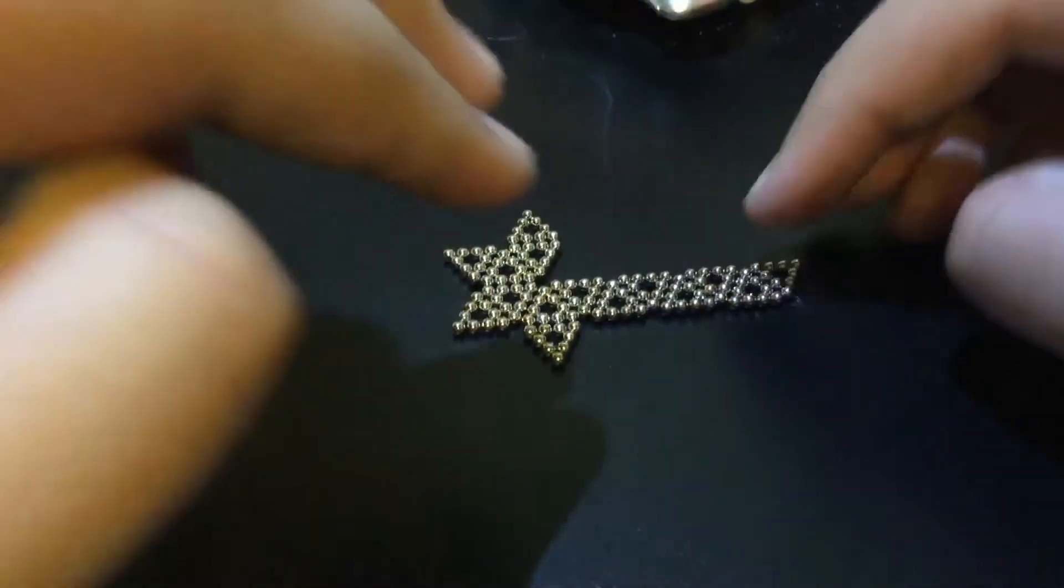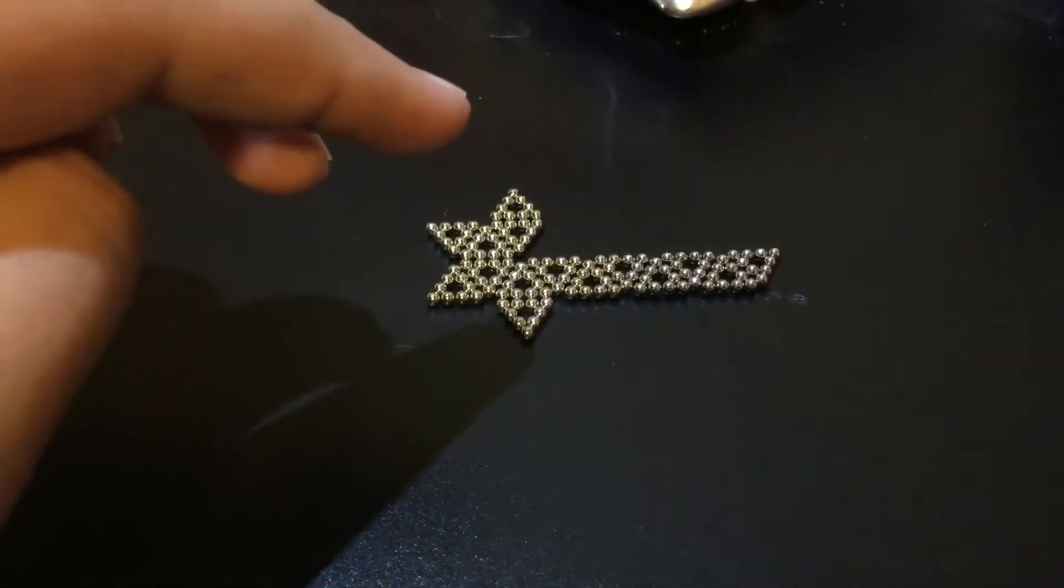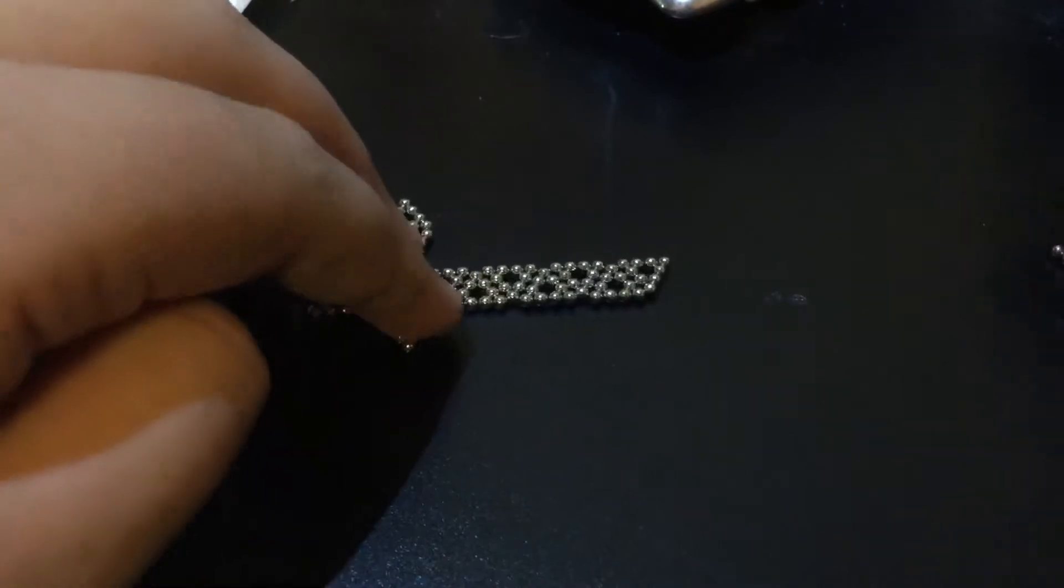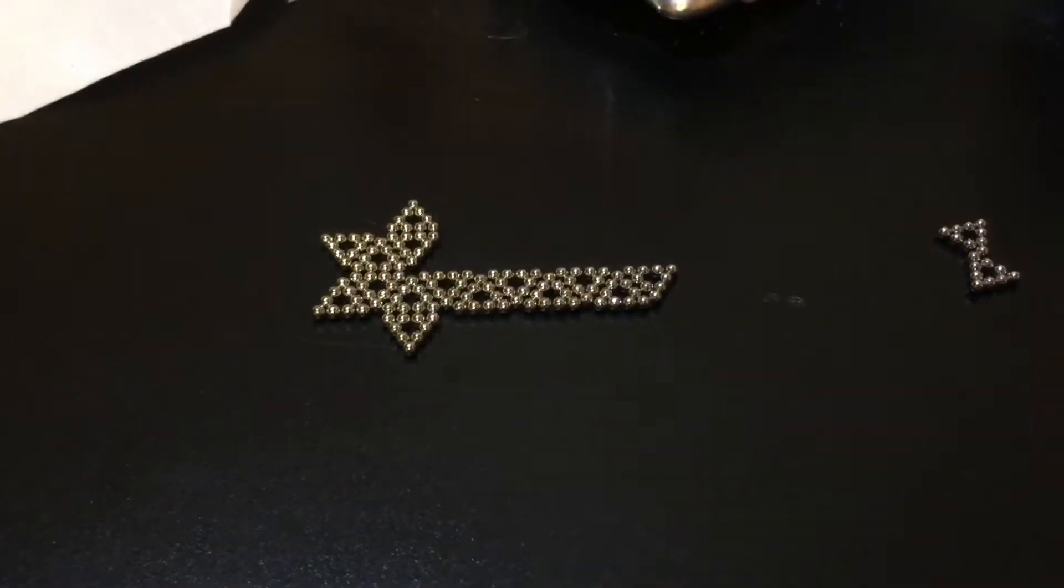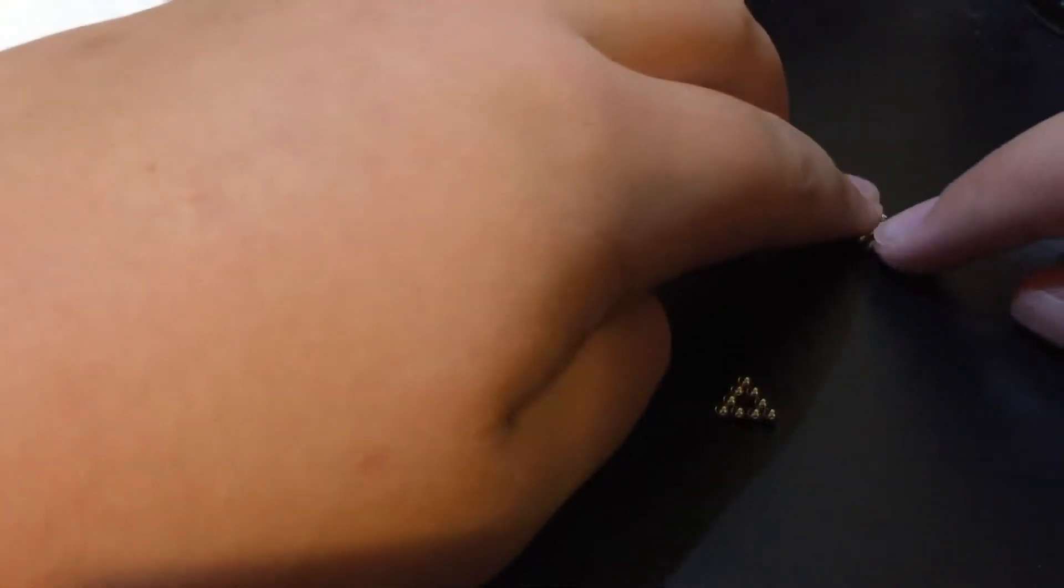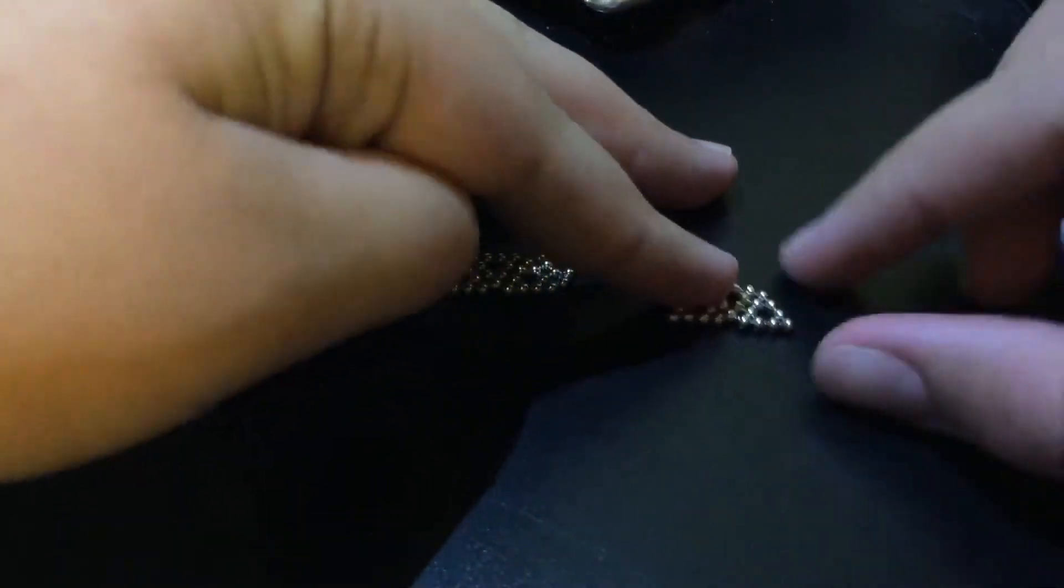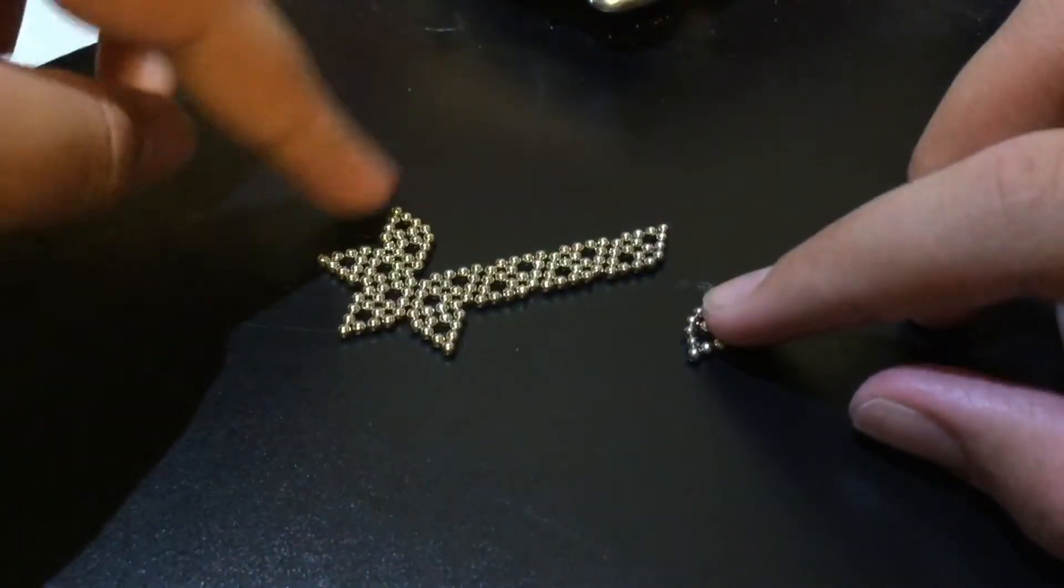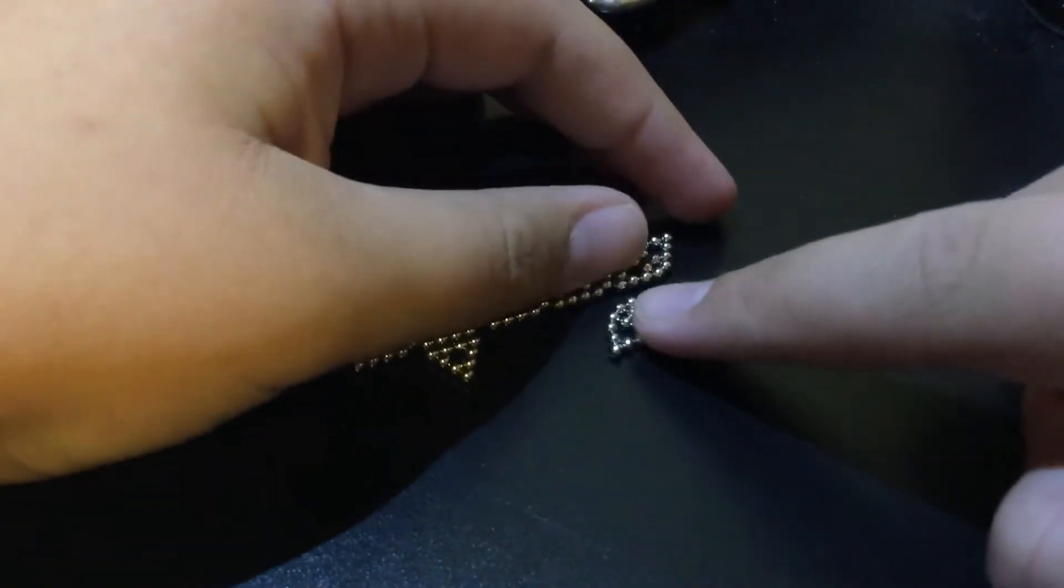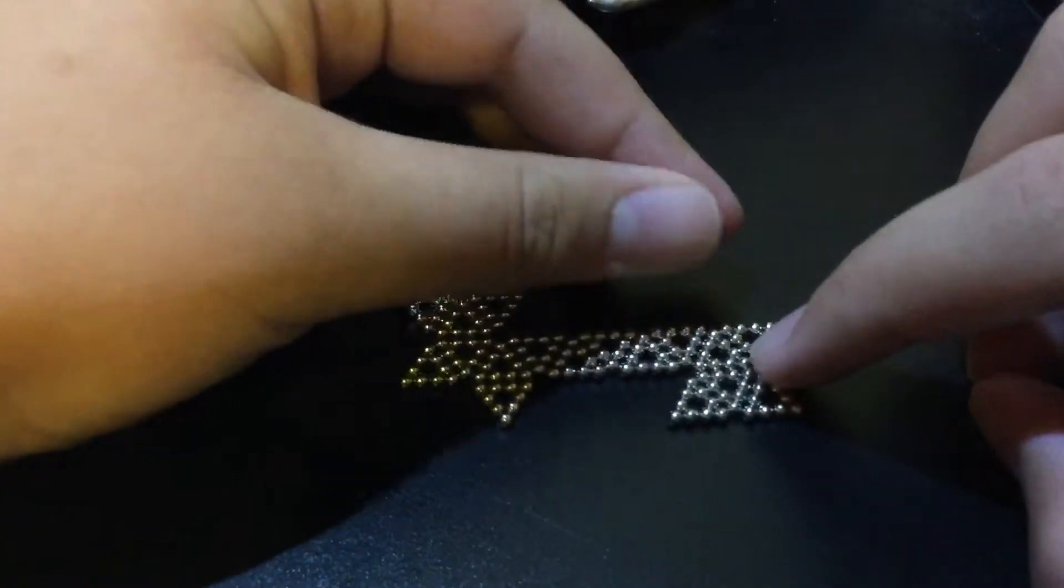Then you are going to flip flop it and do it on this side. So grab another 3 magnets, 2, as long as they don't stick together, 3. And separate them if they stuck together while moving them. Do the same thing. Put them together. And instead of putting them on top, you are going to put them on bottom. So like, I have to flip it over, like so.